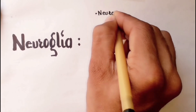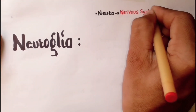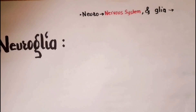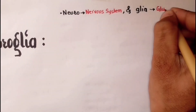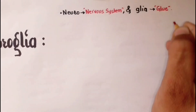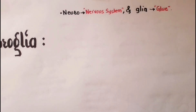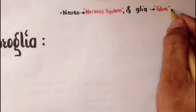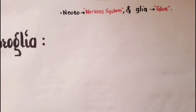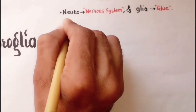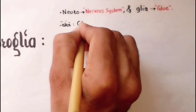Neuro refers to the nervous system, while glia is a Greek word that means glue. These cells are named neuroglia because the early histologists believed that neuroglial cells are the glue that held the nervous tissues together. That is why neuroglial cells are also named glial cells.